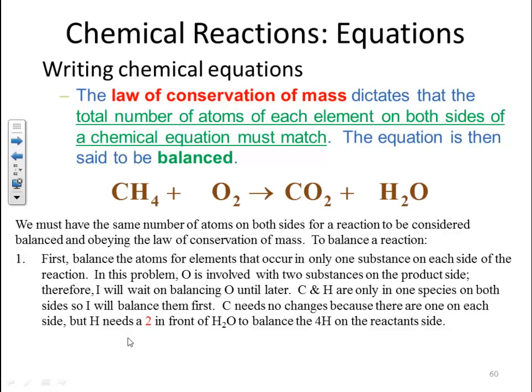You can see that carbon, I have one carbon on both sides. So I don't need to change anything there. So that's balanced. But on hydrogen, you can see that I have four on one side and two on the other. So to balance that, I could easily just put a 2 coefficient in front of water and that would give me my four hydrogens on both sides. So I'll do that.